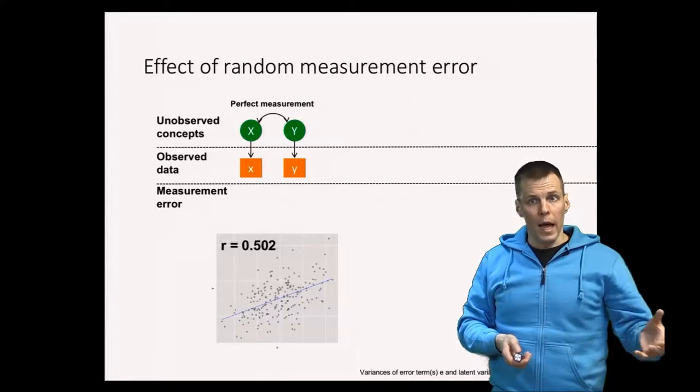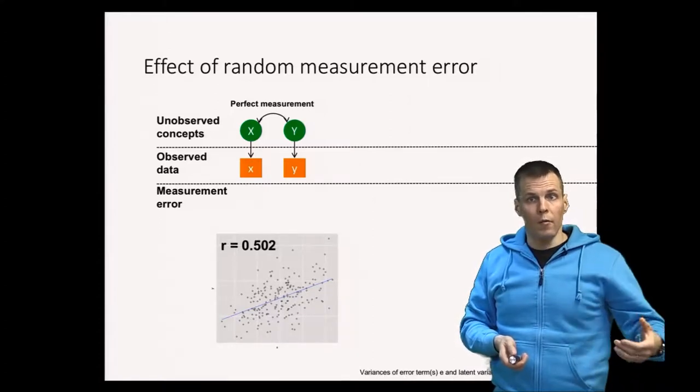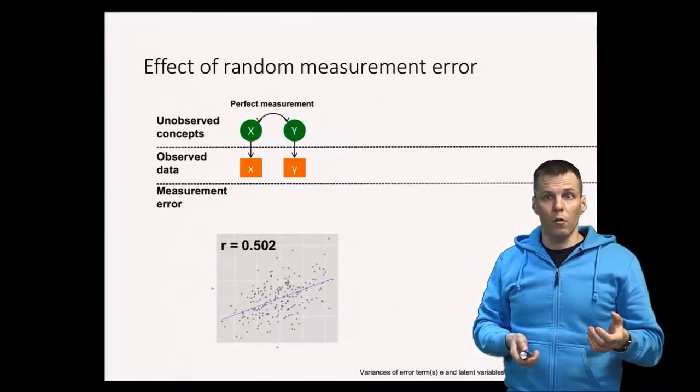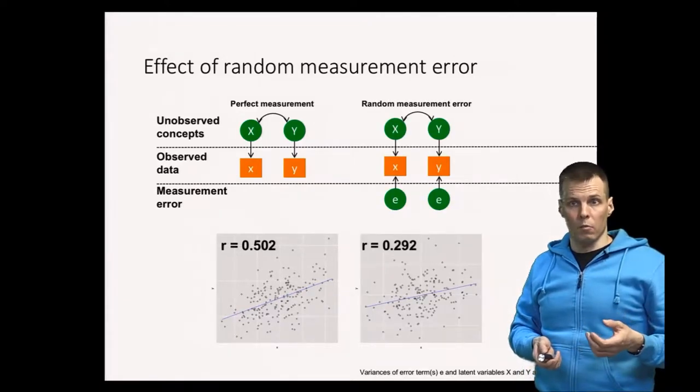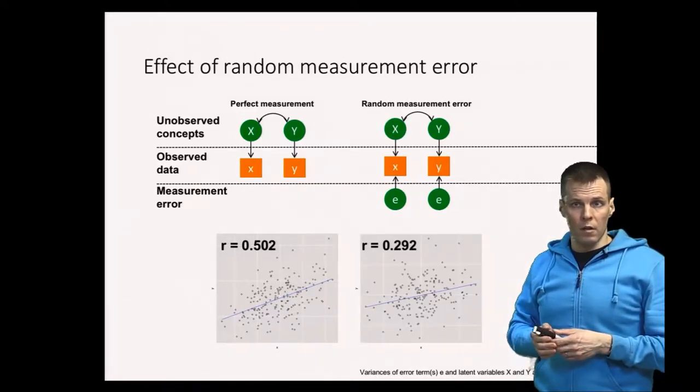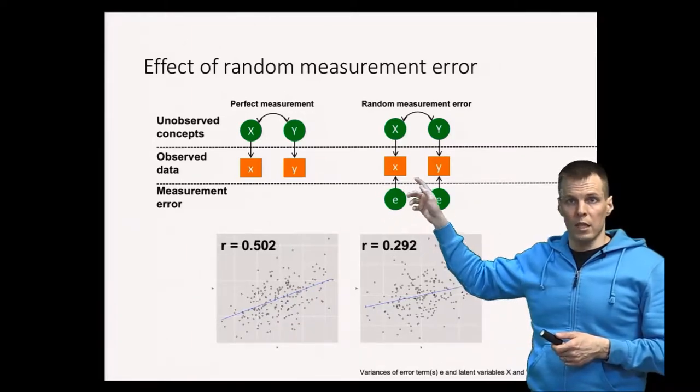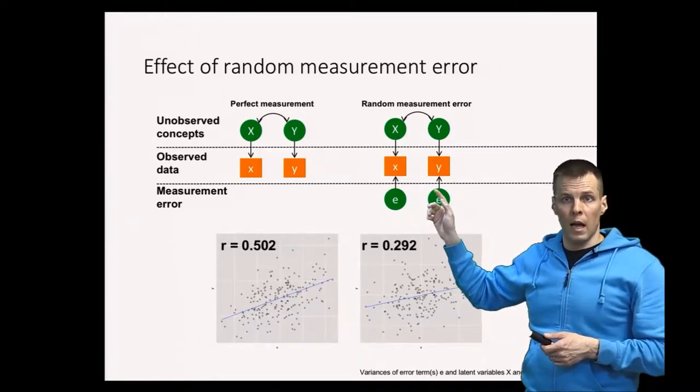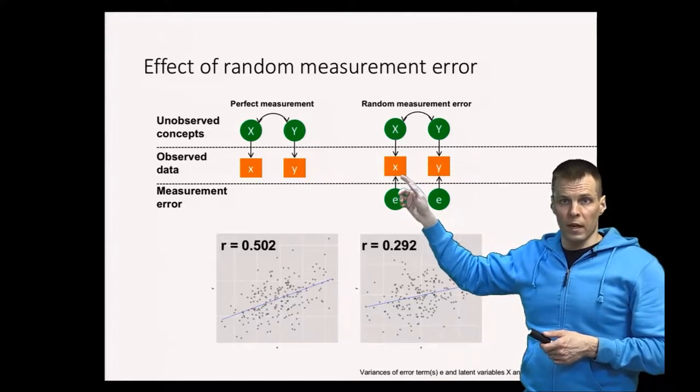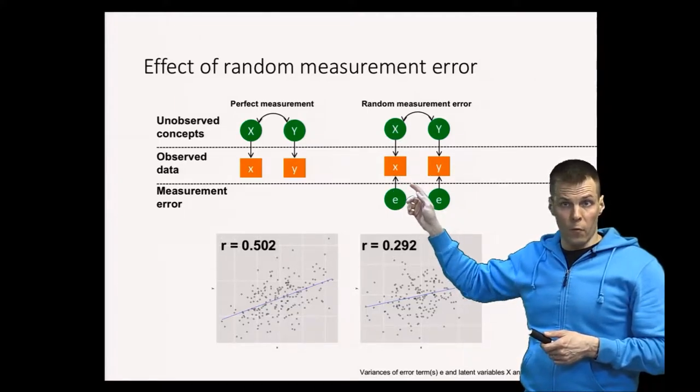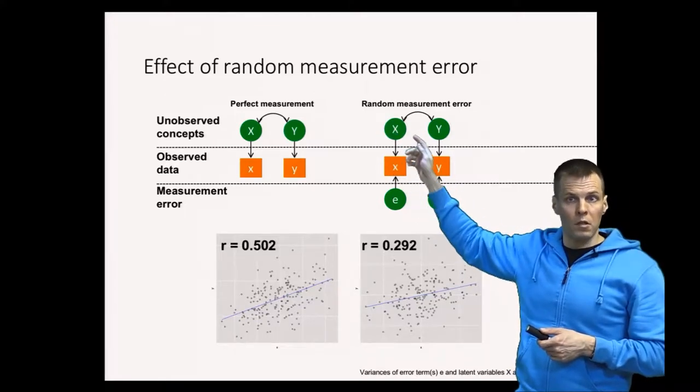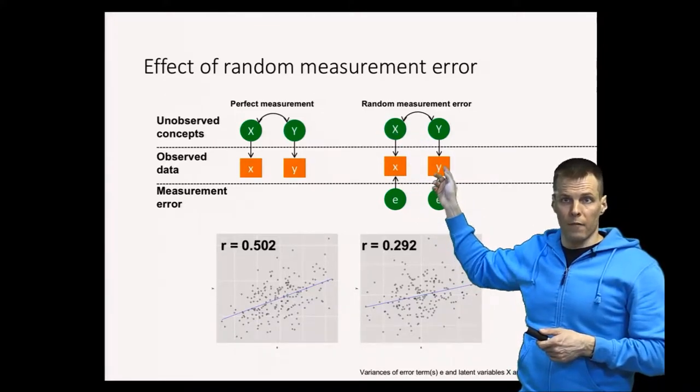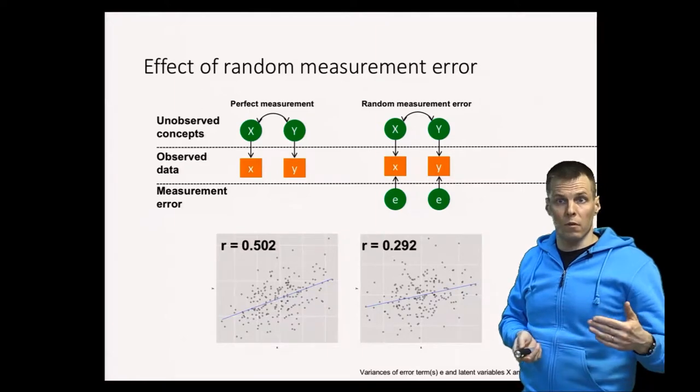So what will happen if we have unreliable measurement? If we have random noise in our measurements, the estimated correlation will be too small. So here in this case, the reliability of X and Y is 50%, so that half of observed X is measurement error, half of observed X is the latent X that we're interested in. Same for Y, half is measurement error. So we are 50% reliable.